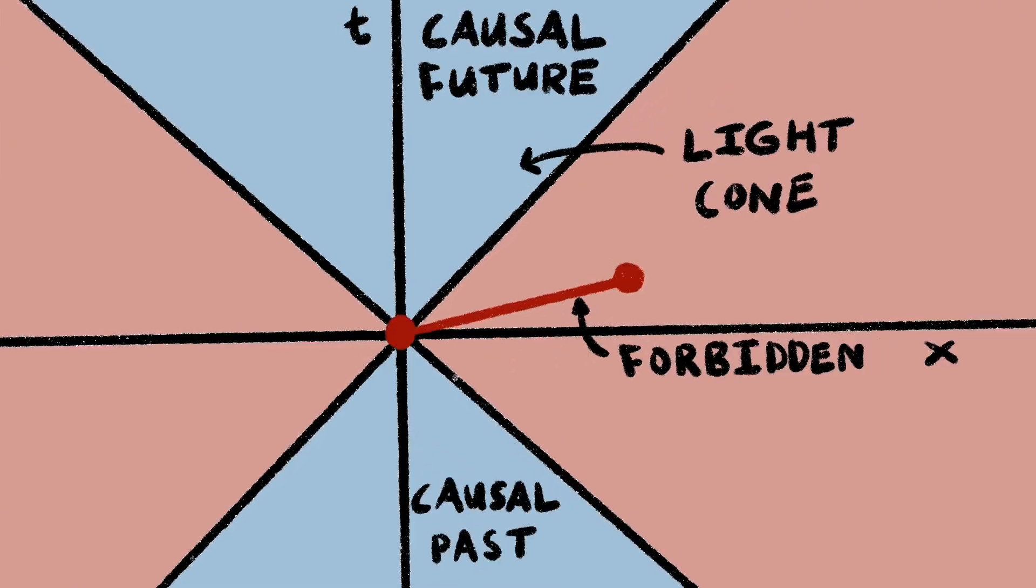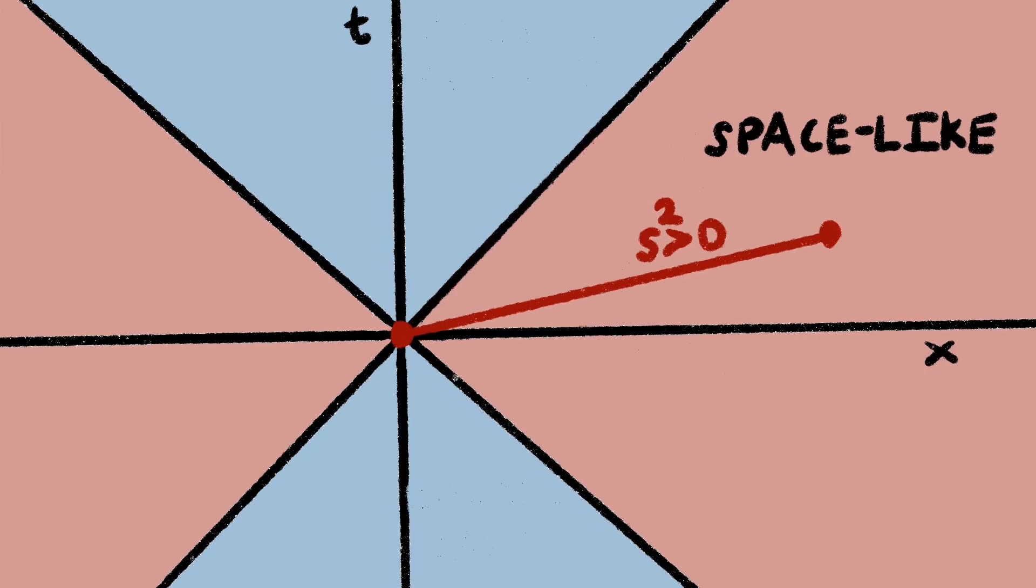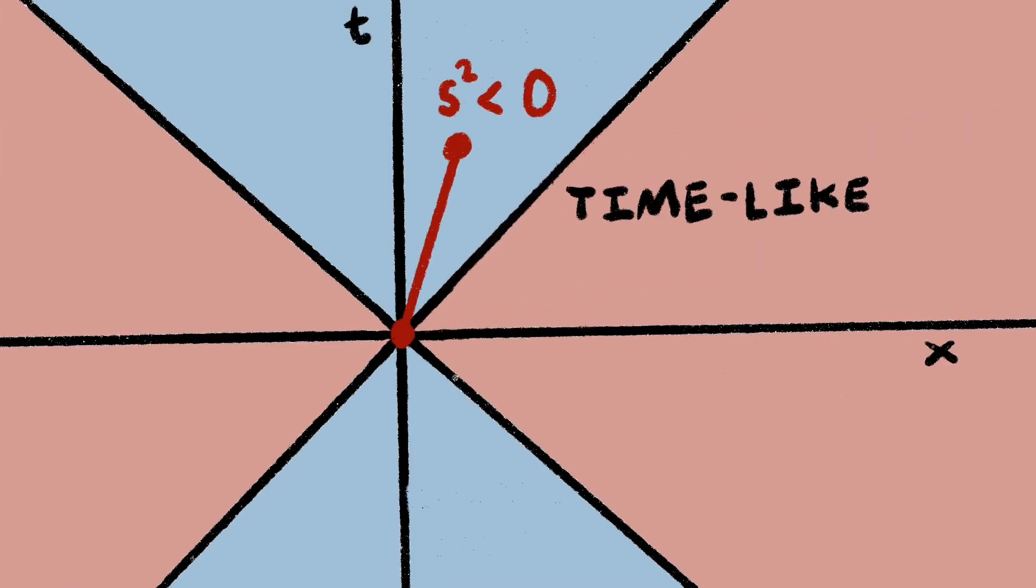If the event is outside of the light cone, it would need to send information faster than the speed of light to reach it. The distance between two events on the light cone itself is zero, and if the distance is greater than zero, then they are called space-like separated, meaning no causality. And if the distance is less than zero, then they are called time-like separated, which means causality can occur.